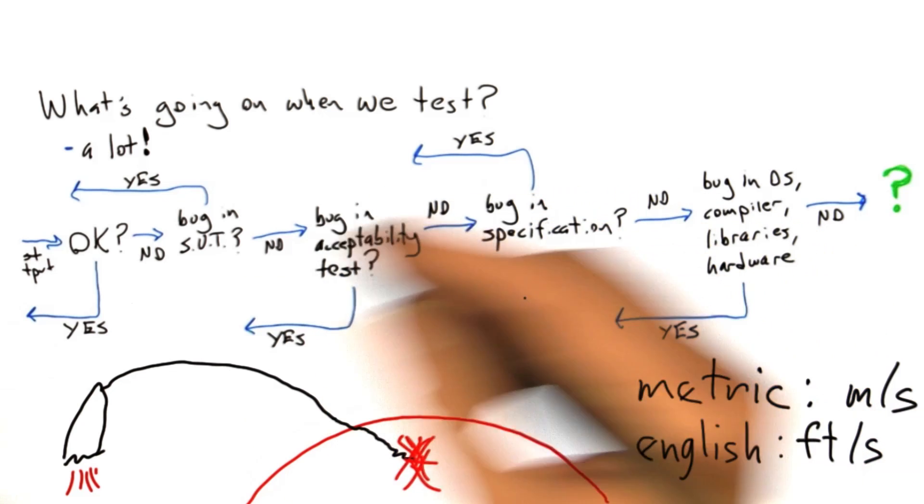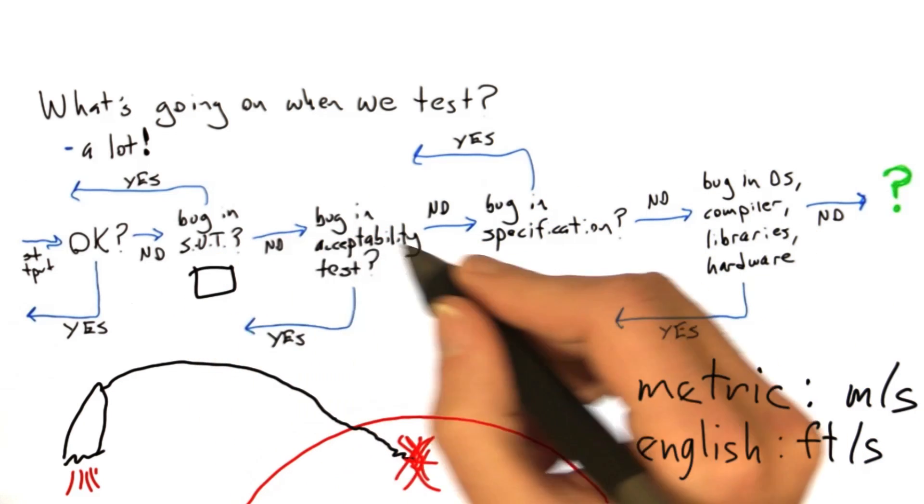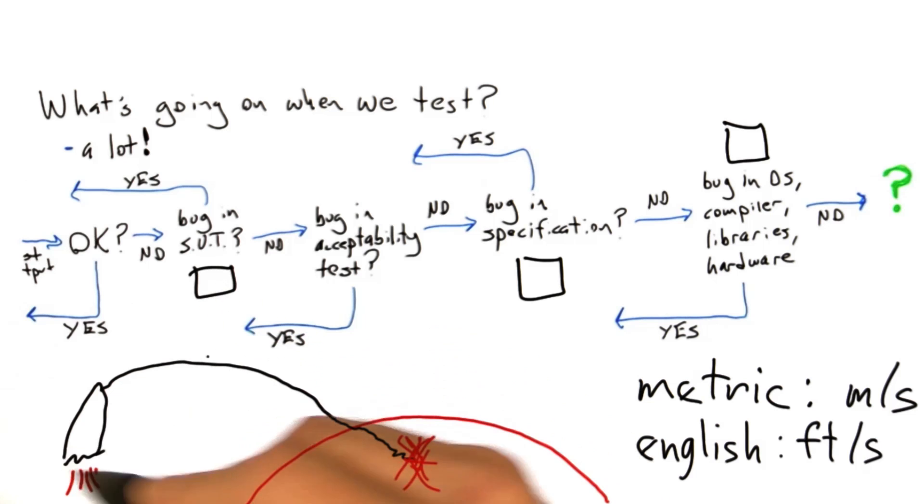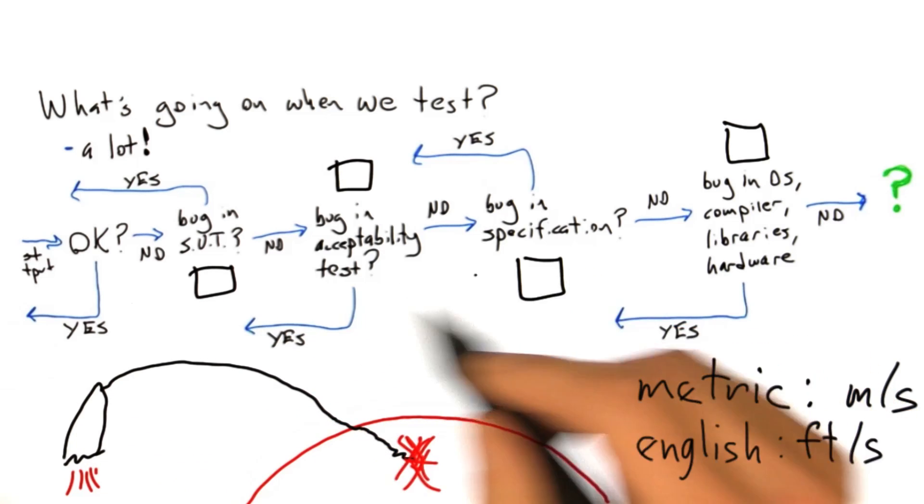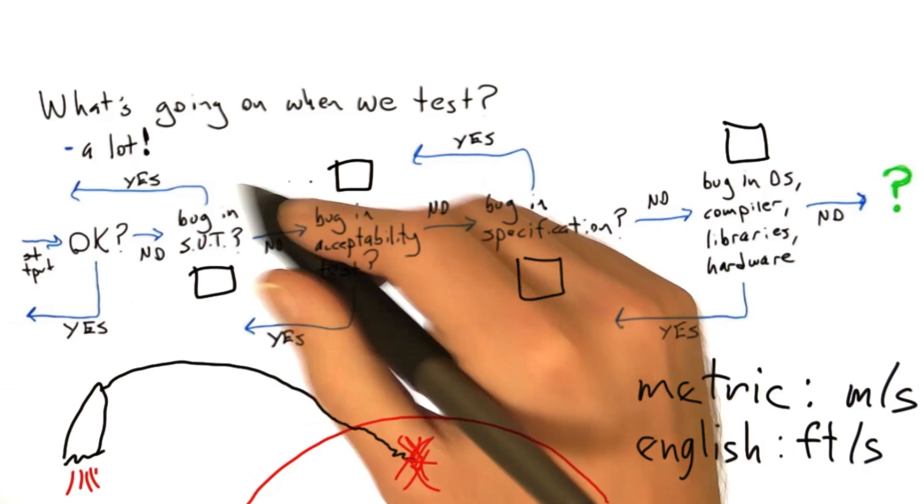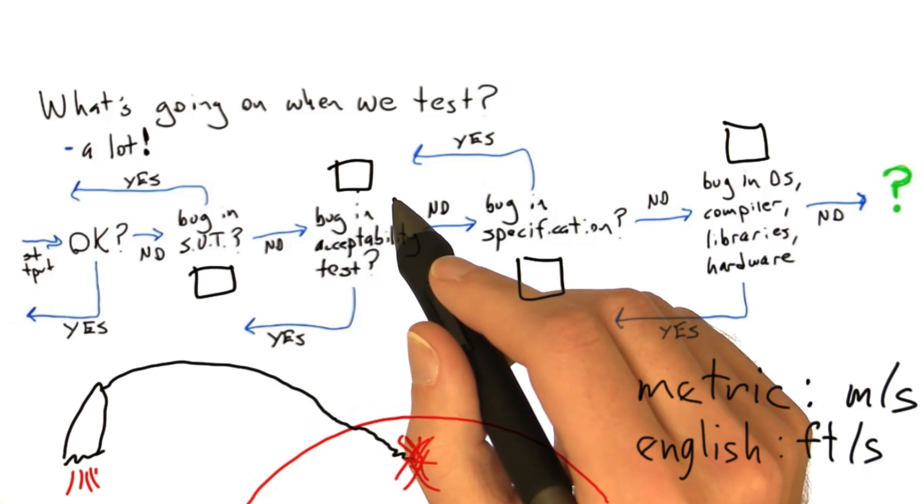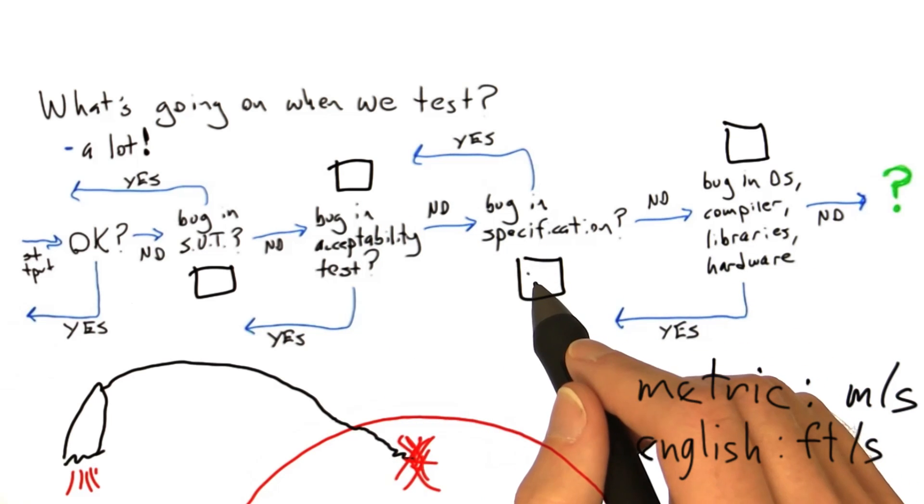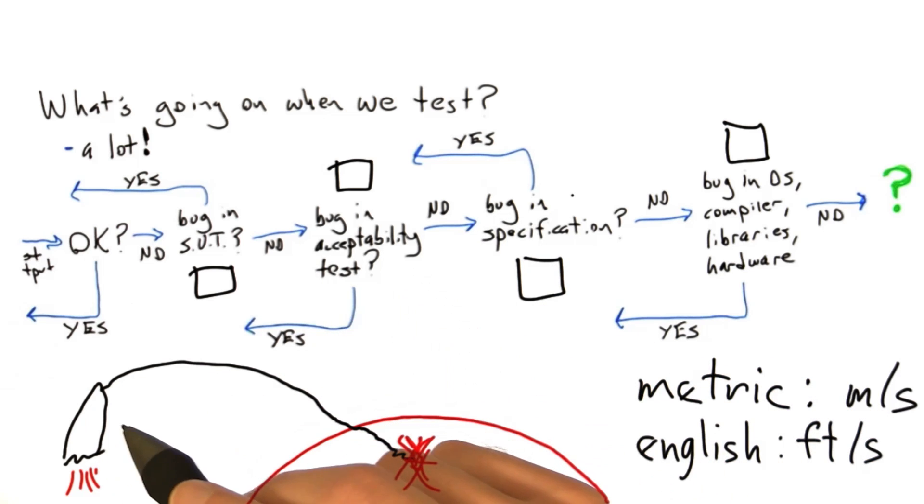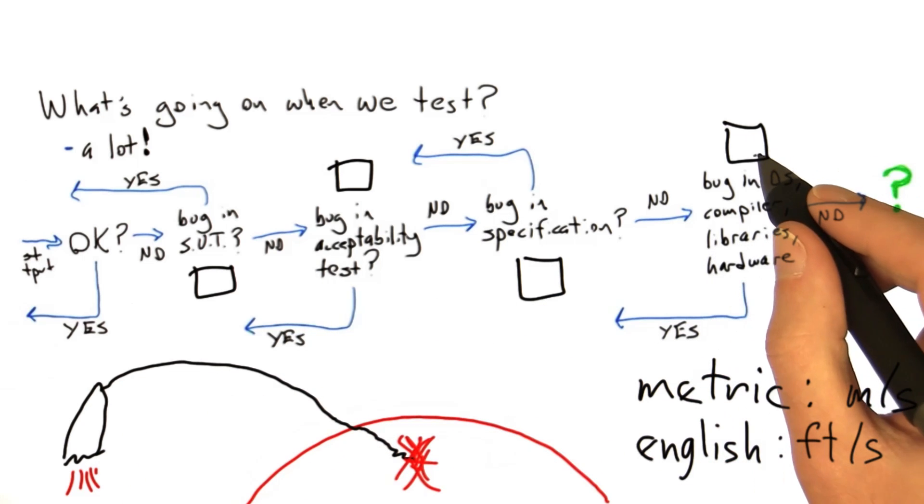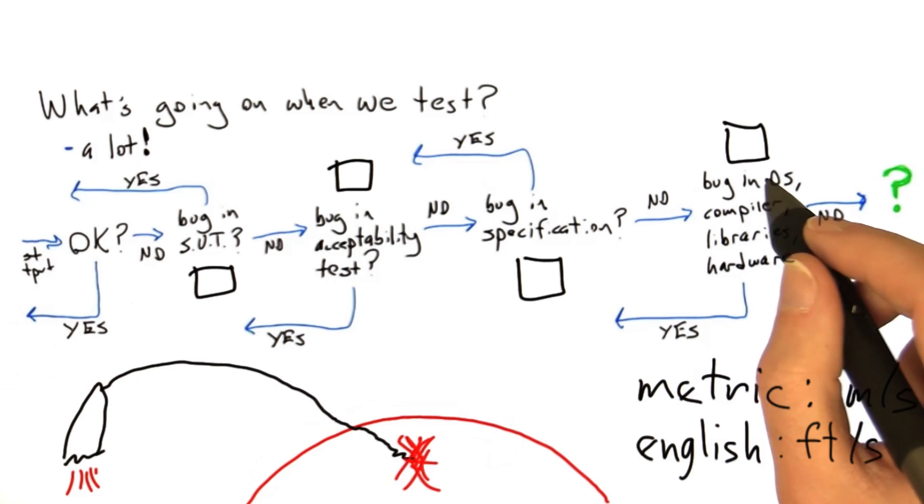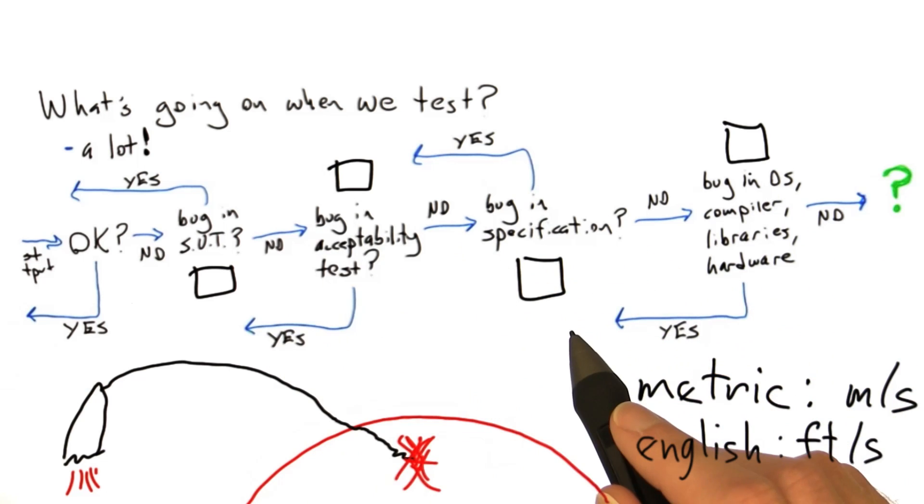Why don't we go ahead and turn this into a quiz. Was this a bug in the software under test, that is the actual software of the Mars Climate Orbiter? Was it a bug in the acceptability test when they tested the actual software earlier on? Was it a bug in the specification? Was there actually an underlying bug in how they planned on operating the Mars Climate Orbiter? Or was there a bug in the underlying hardware or libraries or compiler or the operating system of the rocket? So go ahead and mark your answer here.